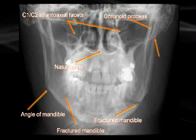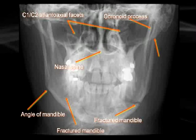Zooming in, we can start to see the features. The angle of the mandible is more posterior. There is the fracture in the body, which would probably cause significant tooth pain as well. You can see the condyle coming up from below, and there is the other fracture. Through these lucencies you can see the C1-C2 atlantoaxial facet joints. Also visible are the nasal spine, some dental fillings, and the coronoid process for the attachment of the temporalis muscle.